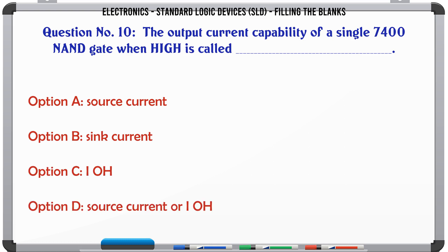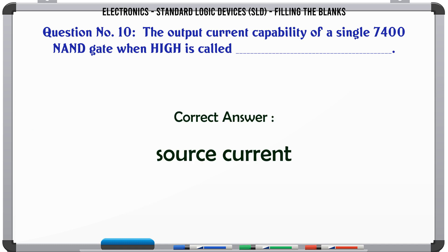The output current capability of a single 7400 NAND gate when high is called: A source current, B sink current, C IOH, D source current or IOH. The correct answer is source current.